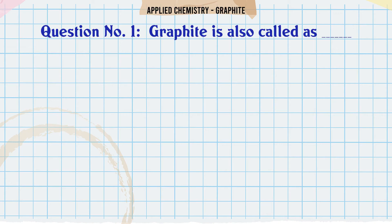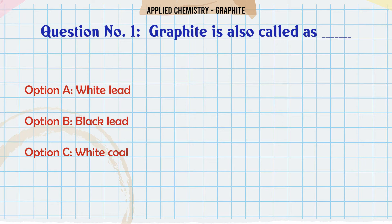Graphite is also called as. A. White lead. B. Black lead. C. White coal. D. Black coal.